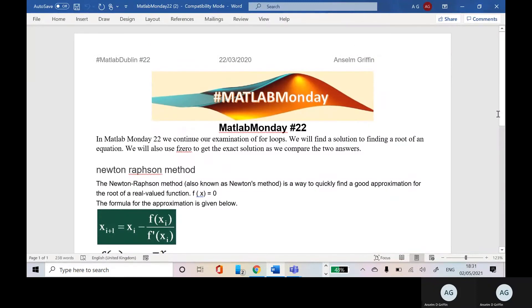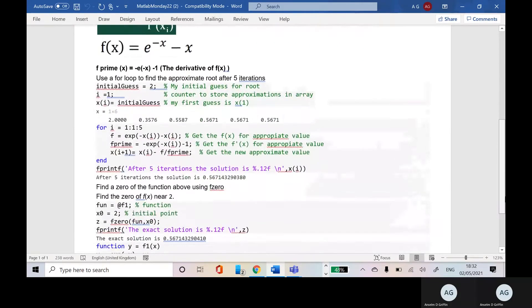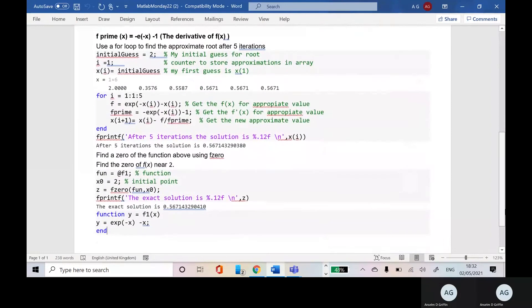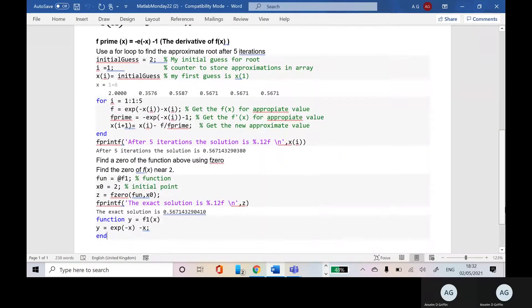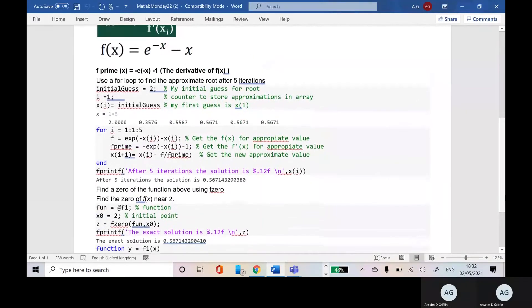Today we're looking at for loops and Newton-Raphson. I've already done this YouTube tutorial, but this time I've added F0, the MATLAB function F0 should get the exact answer. So I'd be able to compare the approximate answer of Newton-Raphson with the exact answer.